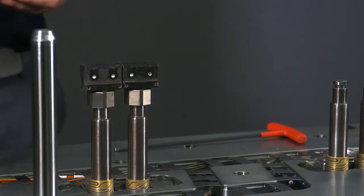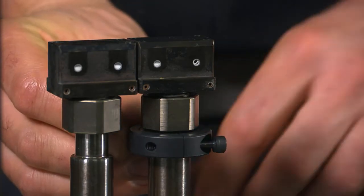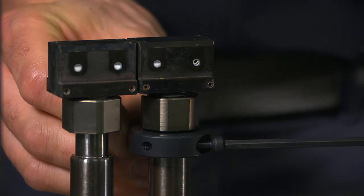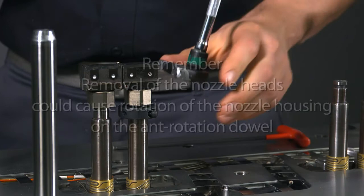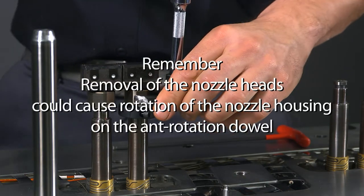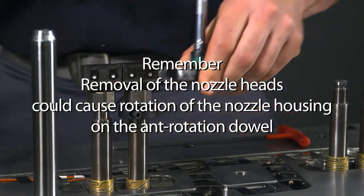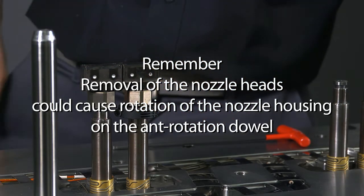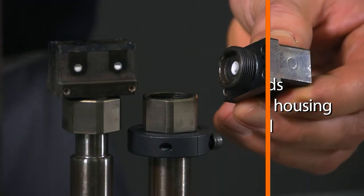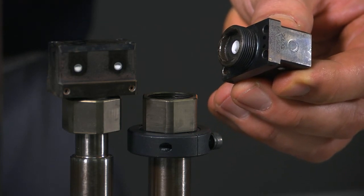Before completely loosening the retaining nut, apply the split collar, which aids in breaking the plastic slug and safely pushing the head off of the housing. Keep in mind that removal of the nozzle heads could cause rotation of the nozzle housing on the anti-rotation dowel. This will require the standard side gate assembly procedure of the cavity plate to ensure that the nozzle heads realign with the nozzle tips during reassembly.